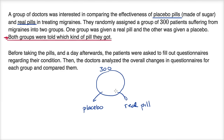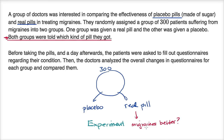Well, we're taking our groups and randomly putting them into two different groups — you could call the placebo group the control group, and the real pill group the experimental group. So this is a classic experiment. You're trying to establish a causal relationship — you want to see whether this real pill actually makes migraines better and does it do it better than a placebo. You're randomly putting the people in both groups to try to distribute any confounding variables that there might be. So this is clearly an experiment.